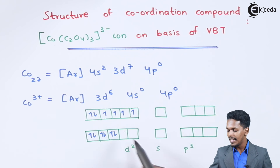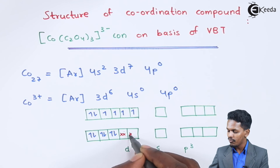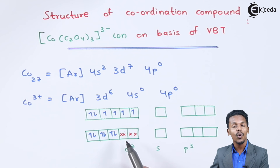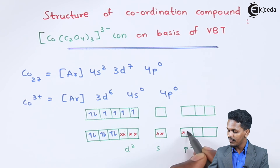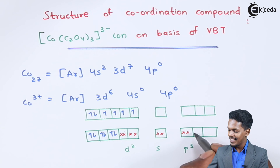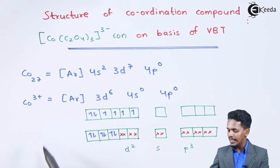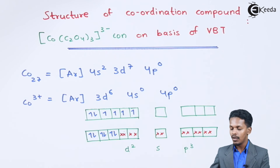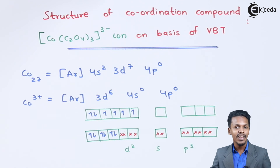Now let us understand the electron filling due to the ligands. The first 4 electrons come from the first C₂O₄, the next 4 electrons come from the second C₂O₄, and the final 4 electrons come from the third C₂O₄. This is how the overlapping takes place, and this is the complete electronic configuration of the [Co(C₂O₄)₃]³⁻ ion.